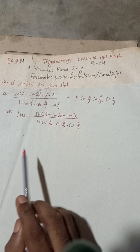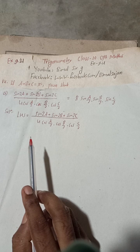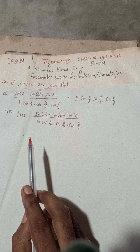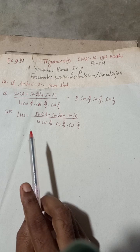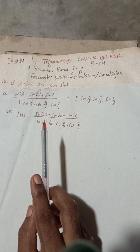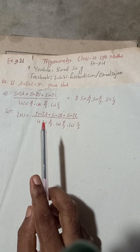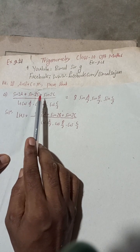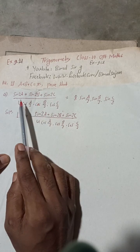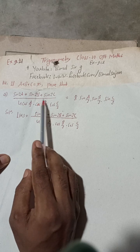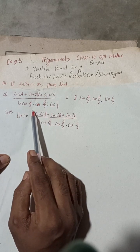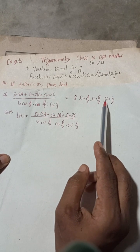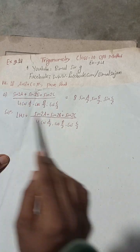Welcome back to Bimal Sarji's YouTube channel. This is question number 14 of Exercise 9.4, Trigonometry, Class 10 Optional Mathematics. I have already solved questions 15 and 16 — you can check the playlist. The question is: if a + b + c = π, prove that (sin 2a + sin 2b + sin 2c) / (4 cos(a/2) · cos(b/2) · cos(c/2)) = 8 sin(a/2) · sin(b/2) · sin(c/2).